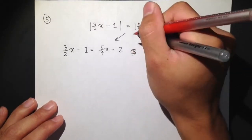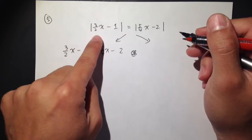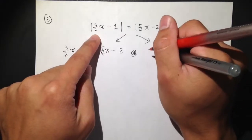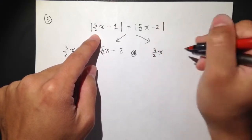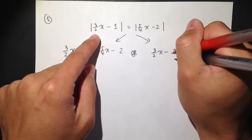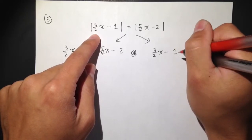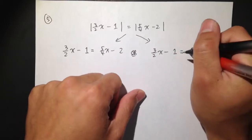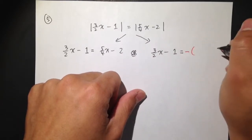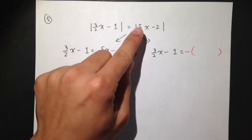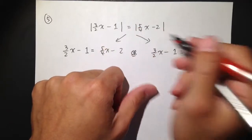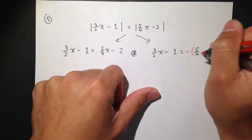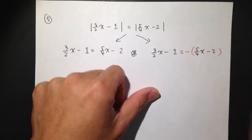Or the second situation that we'll solve is you're going to write down the inside of the first absolute value, which is 3 over 2x minus 1. And that's equal to, for the second situation, you're going to have a negative and then put parentheses first, and then put the inside of the second absolute value inside here, 5 over 4x minus 2.